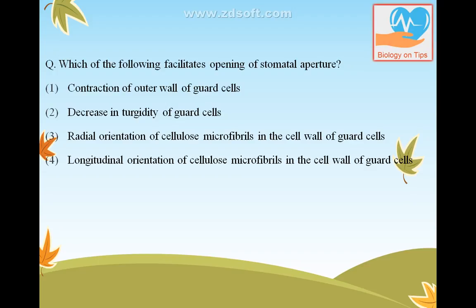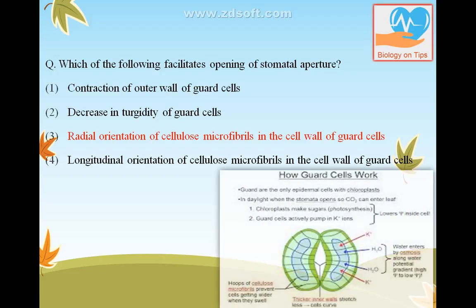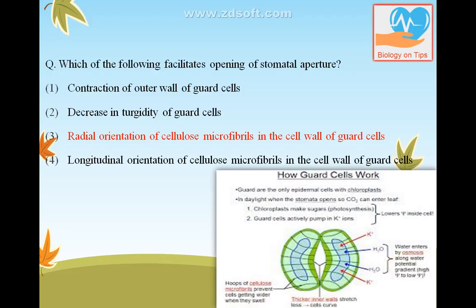Which of the following facilitates opening of stomatal aperture? The answer is radial orientation of cellulose microfibrils in the cell wall of guard cells. In the opening of guard cells, the cell wall plays an important role. The radial microfibrils help maintain the turgidity of the guard cells, as you can see in the diagram.